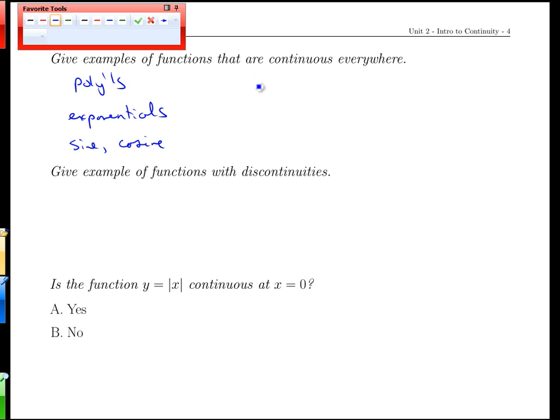There are some functions that we've seen though that aren't continuous, at least not everywhere. So one would be x to the one half or root x. The problem there, of course, is that it's not defined at all for x less than 0. So it would be continuous for x greater than 0. We can say that.